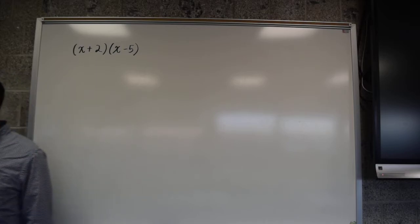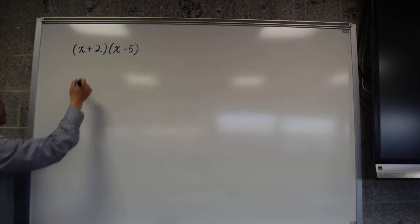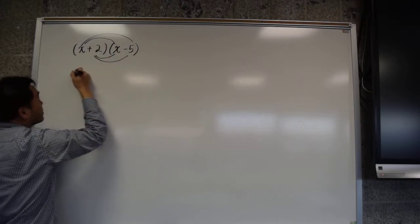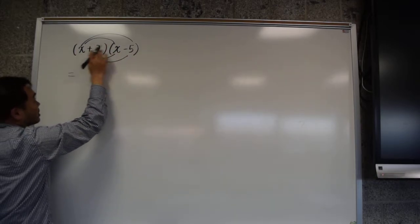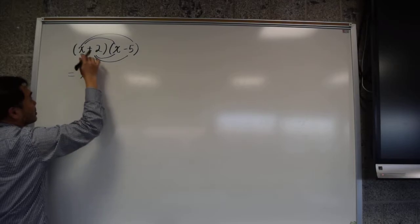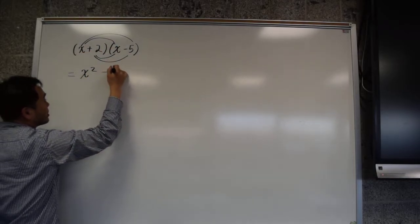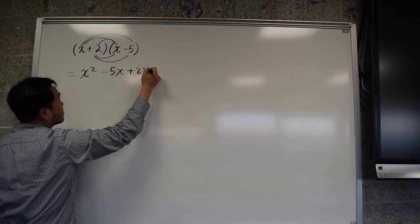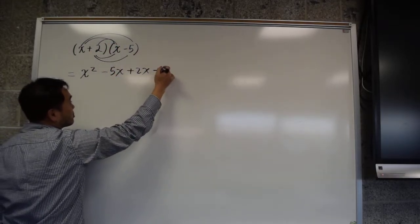you are told to FOIL it, meaning that you multiply pairwise. So you have x times x, which is x², x times -5, which is -5x, 2 times x, which is 2x, 2 times -5, which is -10.